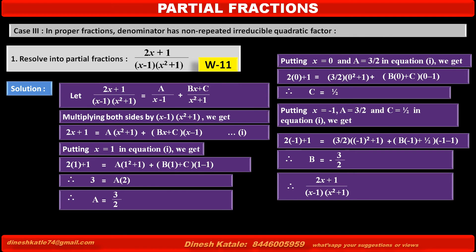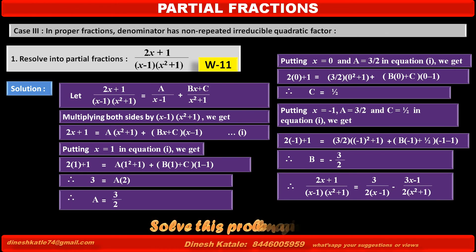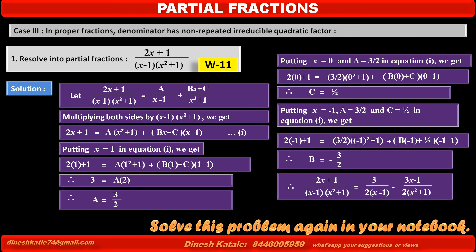Therefore, the given fraction (2x + 1) upon (x minus 1)(x squared plus 1) equals 3 upon 2(x minus 1) minus (3x minus 1) upon 2(x squared plus 1). For better understanding, take a pause here and try to solve this problem again in your notebook without copying.